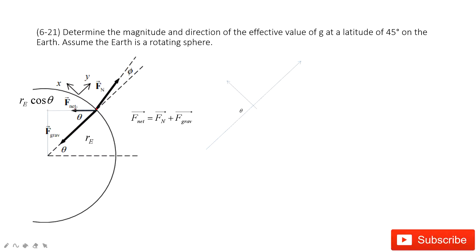So we get the net force. This net force is just the vector addition of the normal force plus the gravity. This net force causes the particle to do circular motion on the Earth, because the Earth is continuously rotating. The radius for this circular motion is Re·cosine(θ), where Re is the Earth's radius and θ is the latitude angle.